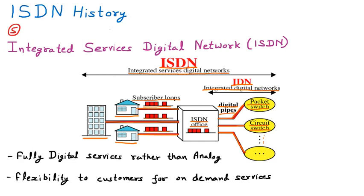Landline phones are no longer very popular because everything has converted to digital. We work on mobile technology, and with one wire at home we can watch TV and make phone calls — all things are integrated together. That is ISDN — Integrated Services Digital Network — and that is all about the history of ISDN.